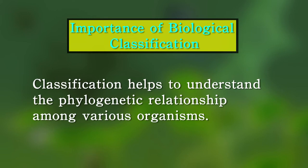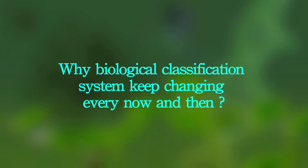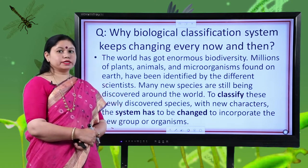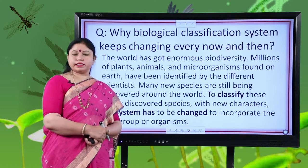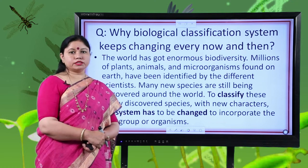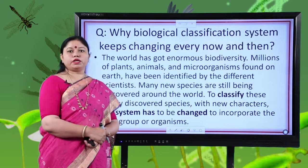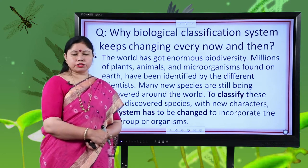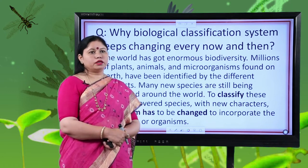Why does our biological classification system keep changing? If we look at the history, it goes back to Aristotle, who is known as the father of biological classification. He was the first person to feel the need for classification while studying the animal kingdom, classifying animals based on their habitat — whether they lived on land, water or in air. After Aristotle, many scientists worked on classification systems, leading to two kingdom classification, five kingdom classification, and three domains of life.